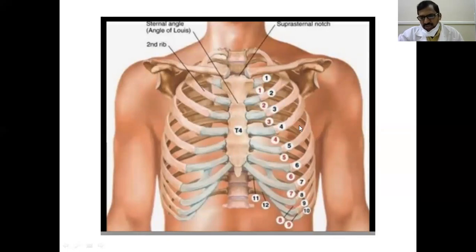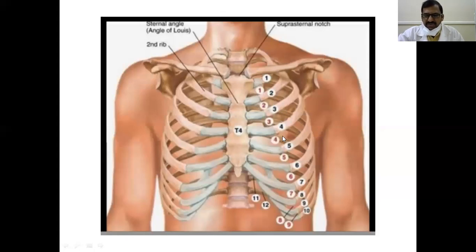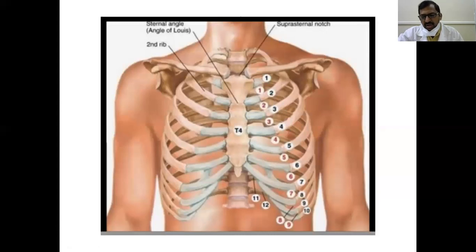On both sides you see ribs. There are 12 pairs of ribs — 12 on the right side, 12 on the left side. In between these ribs there are spaces called intercostal spaces. These intercostal spaces are filled with and covered by muscles. Within these muscles there are neurovascular bundles — that is, nerves and blood vessels.